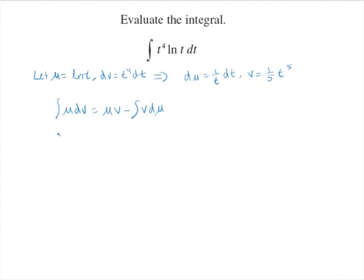So we take the integral of t to the fourth times the natural log of t dt, and that equals one-fifth t to the fifth — that's v times u — times the natural log of t, minus the integral of one-fifth t to the fifth times one over t dt.